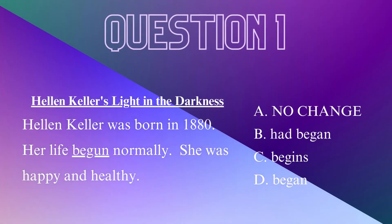Question 1. Helen Keller's 'Light in the Darkness' is the title of the passage that will have 15 corresponding questions. Helen Keller was born in 1880. Her life begun normally — she was happy and healthy.